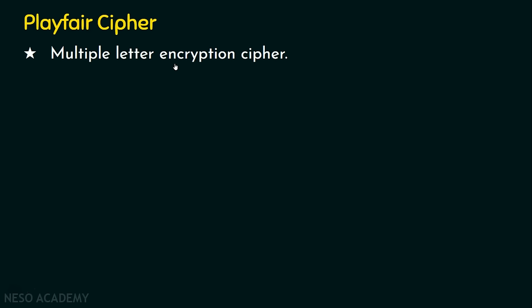In Playfair Cipher, suppose the plain text letter D is replaced as M — for the next occurrence of D, it may not be M. It could be N or a different character. This will confuse the attacker: in one occurrence D is replaced as M, in another occurrence D is replaced as a different letter. This multi-letter encryption technique improves security compared to Caesar Cipher, Shift ciphers, and mono-alphabetic ciphers.